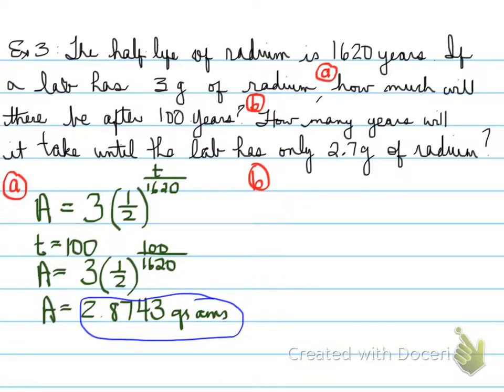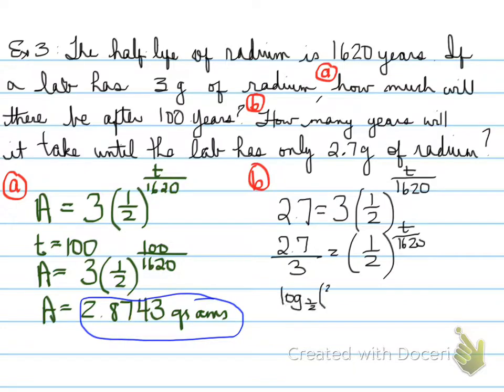Let's look at the next question. Part B says, how many years will it take until the lab has only 2.7 grams of radium? Well, we know it's got to be more than 100 years, because it's 2.8743, so we know it's going to be more than 100 years. Let's calculate how we get that. Well, 2.7 is equal to 3 times half to the power of t over 1620. We divide by 3 on both sides, and then we take the log of both sides to bring the exponent down, and so it will be 2.7/3. So we convert this to a log equation.